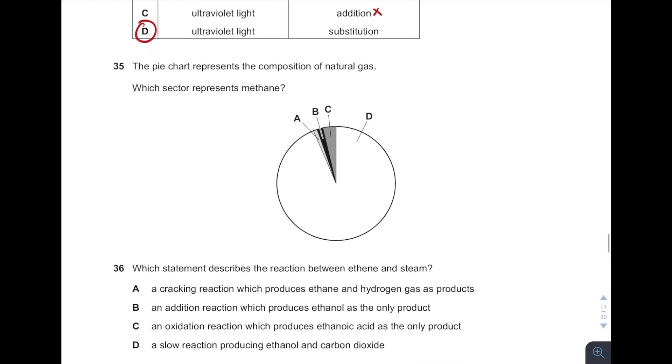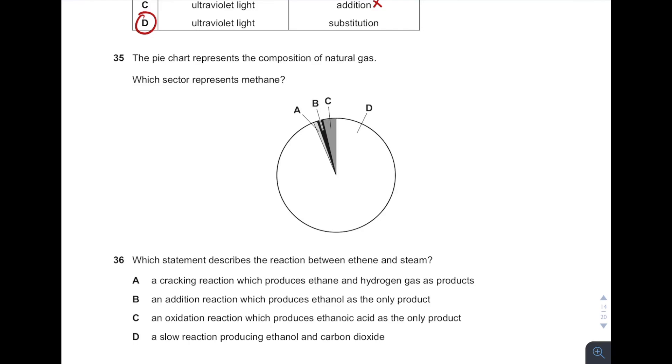And then, which sector represents methane? Remember, this is the composition of natural gas. What is the main gas in natural gas? It is methane. The main gas, which means methane has the high percentage in natural gas. So therefore answer is D.